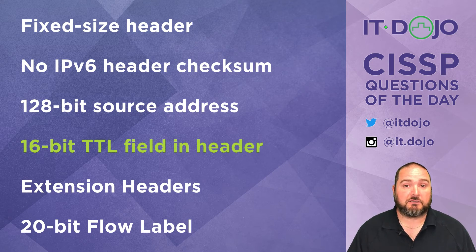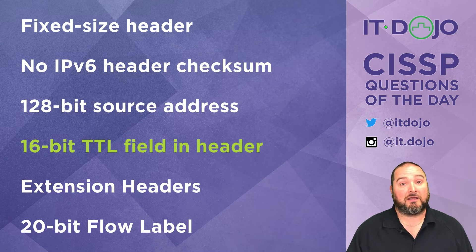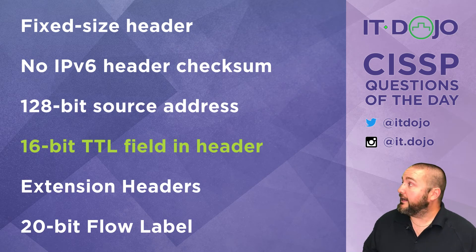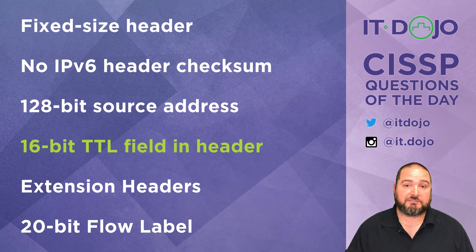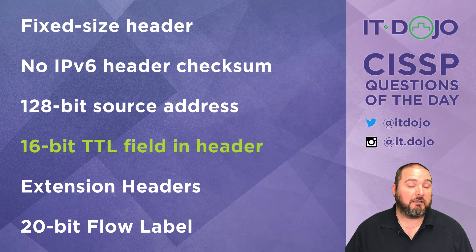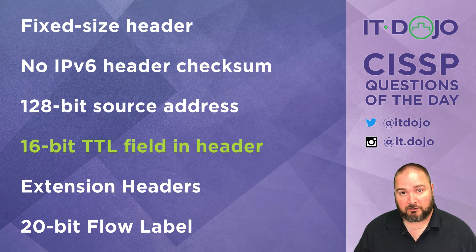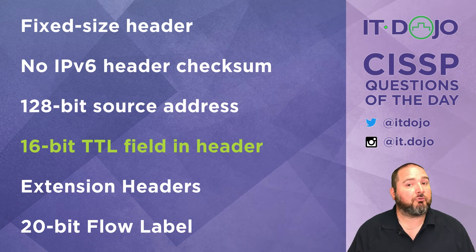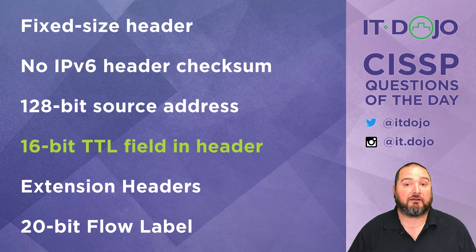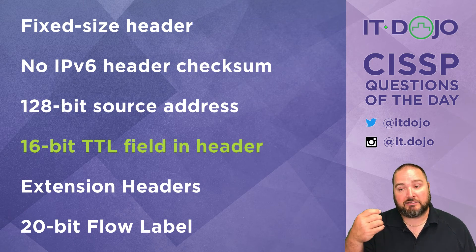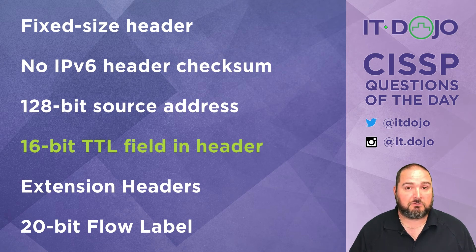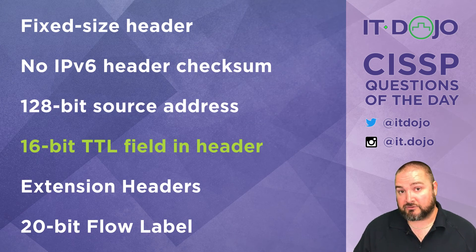Extension headers — yes, the extension header field in essence replaces the protocol ID field from IPv4, which identified the upper-layer protocol such as TCP, UDP, or ICMP. IPv6 replaced the protocol ID with an extension header field that identifies the next header in the chain. One of the big selling points is that extension headers can be daisy-chained, leading from one header to another, giving great flexibility — so this is absolutely a valid characteristic of IPv6.